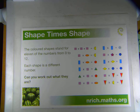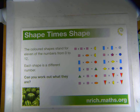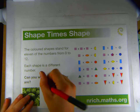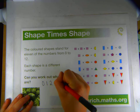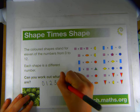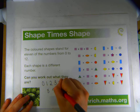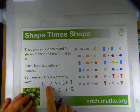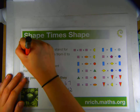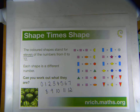It says the coloured shapes stand for 11 of the numbers from 0 to 12. Remember that there are only 11 numbers we are going to be looking for, from a range of 13 numbers altogether. Each shape is a different number — can you work out what they are? I'm going to write my list of numbers from 0 to 12. Because it's 0 to 12 there are 13 numbers, and we need 11 of those, so when there are two left over at the end, don't worry.